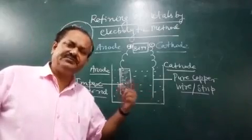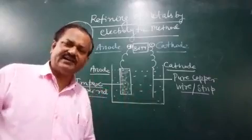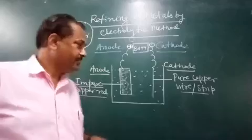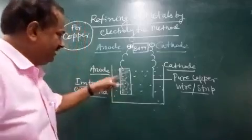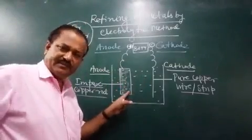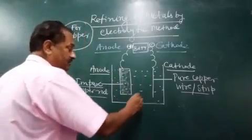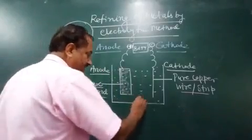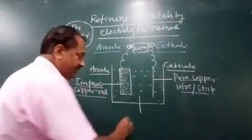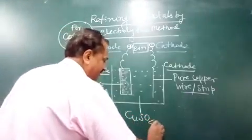The two electrodes are connected by a battery, and there can be different conditions to adjust the current level and voltage. Now as I have taken copper, here the electrolyte taken is copper sulfate (CuSO₄) solution.